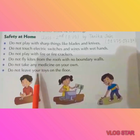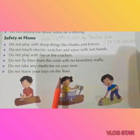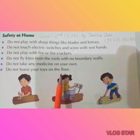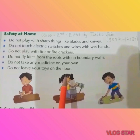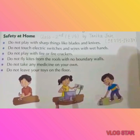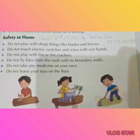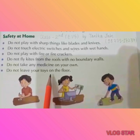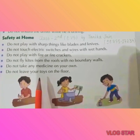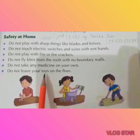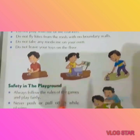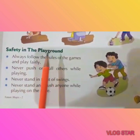The last point for home safety is: do not leave your toys on the floor. When you leave toys on the floor, someone may not see them and can slip or get hurt. So always keep your toys properly and never leave them on the floor. Now our next topic is safety in the playground.